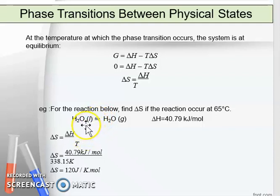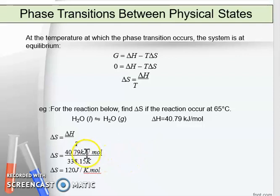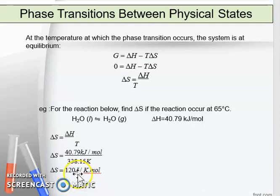For a given reaction, find entropy if the reaction occurs at 65 degrees Celsius. Entropy equals delta H divided by T. With delta H equal to 40.79 kJ/mol, and converting the temperature to Kelvin, we calculate the entropy of the system to be 120 J per Kelvin mol.